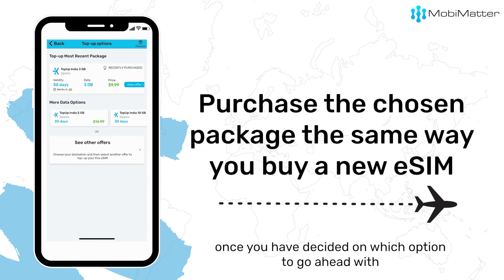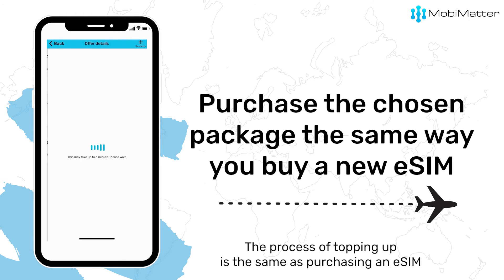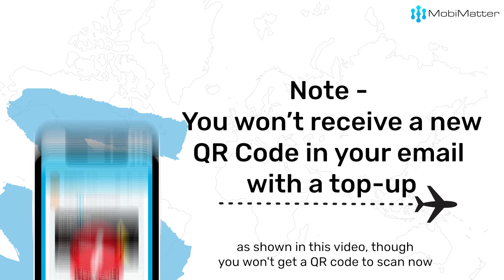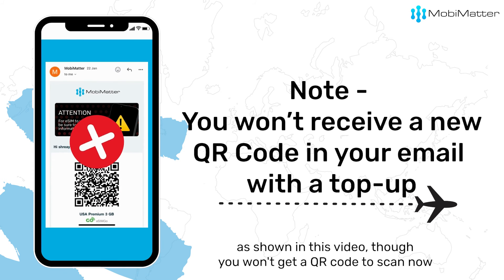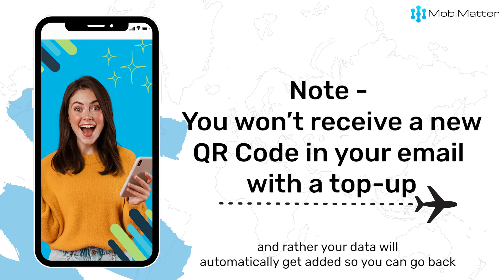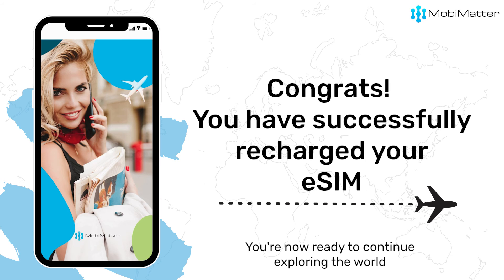Once you have decided on which option to go ahead with, click on that package and go about purchasing it. The process of topping up is the same as purchasing an eSIM as shown in this video, though you won't get a QR code to scan — your data will automatically get added so you can go back to using data seamlessly.